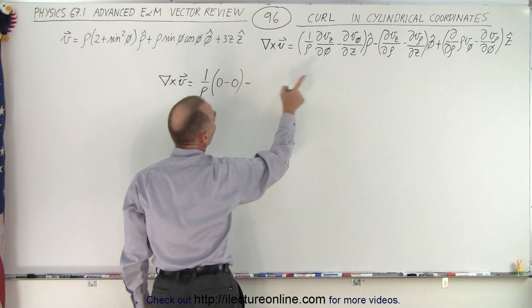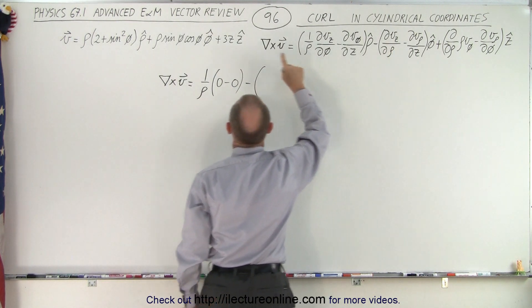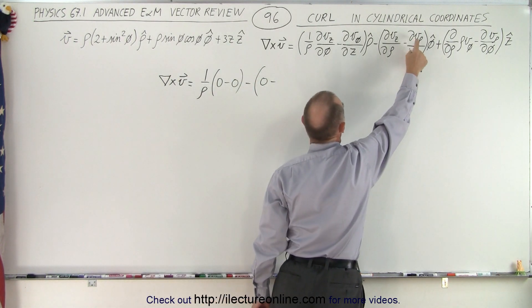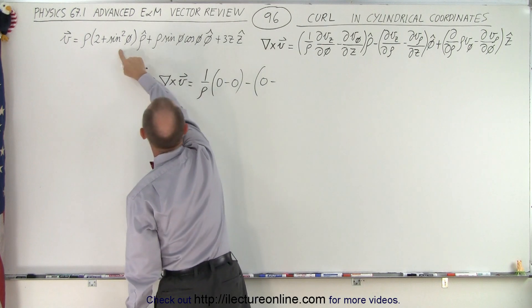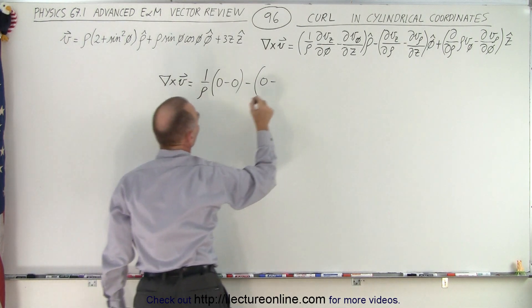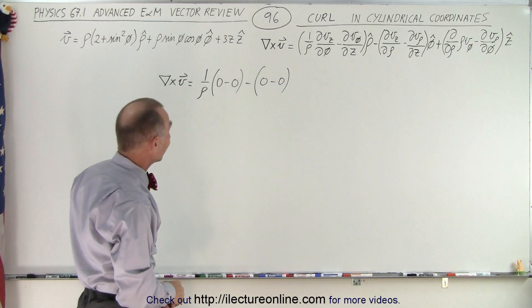So minus, here we have the partial derivative of the z component with respect to rho. Again, there's no rho in there, so that would be zero. Minus the partial derivative of the rho component with respect to z. There's no z in here, so therefore that becomes zero as well. All of a sudden, this looks like a pretty easy exercise, doesn't it?